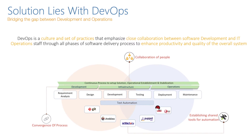The solution lies within DevOps. DevOps is nothing but bridging the gap between development and operation teams. It is a culture and a set of practices that emphasize close collaboration between dev, QA, testing, and IT operations teams through all phases of the software delivery process, to enhance productivity, reduce mean time to delivery, and improve the quality of the overall system.